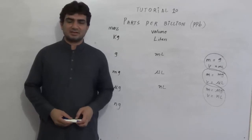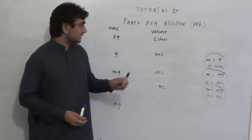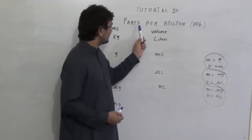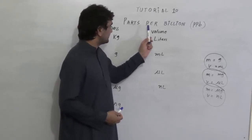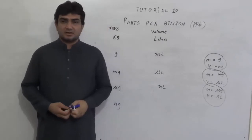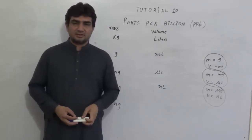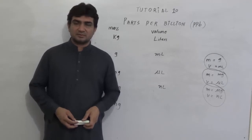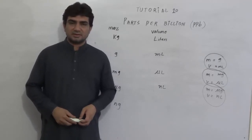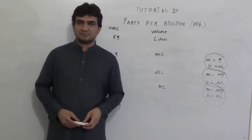Hi everybody, this is the last tutorial of the series and here we will talk about another concentration term: parts per billion. Parts per billion is a very small quantity of solute and it is normally expressed for trace concentrations of solutes in solutions.